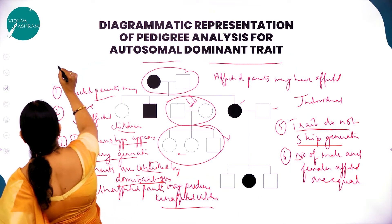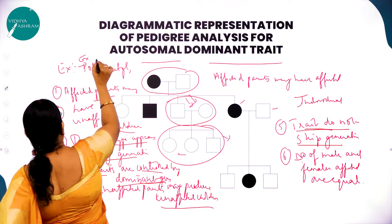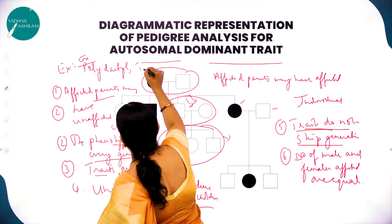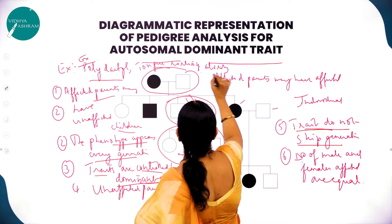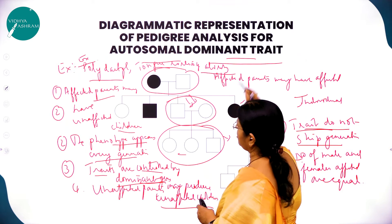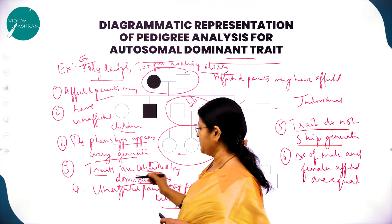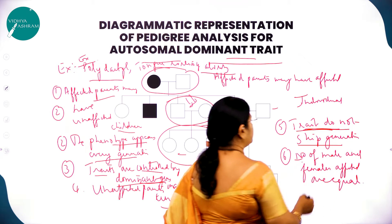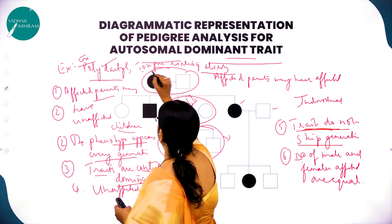Another feature is that the number of males and females affected are equal. Examples of autosomal dominant traits are polydactyly and tongue rolling ability.